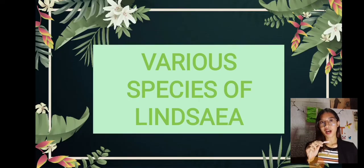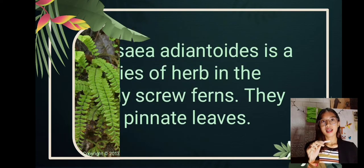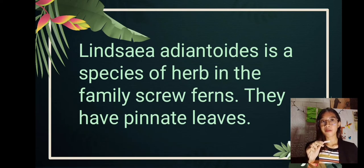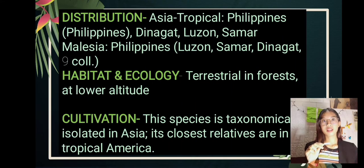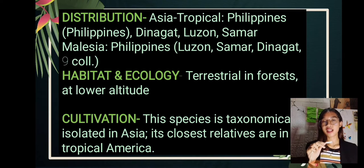The first representative species is called Linsaea adiantoides. Linsaea adiantoides is a species of herb in the family of scrow ferns, and they have pinnate leaves. It is endemic to the Philippines, specifically Luzon, Samar, and Dinagat. The habitat and ecology is terrestrial in forests at lower altitudes. The cultivation of this species is taxonomically isolated in Asia, and its closest relatives are in tropical America.